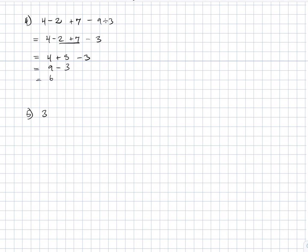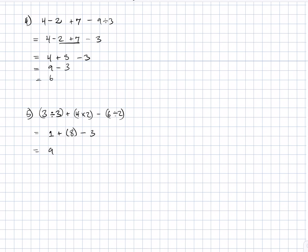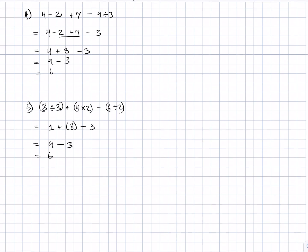Example 5: (3 ÷ 3) + (4 × 2) − (6 ÷ 2). Based on the order of operations we evaluate the expressions in the brackets first, giving us 1 + 8 − 3, which is equivalent to 9 − 3, which equals 6.